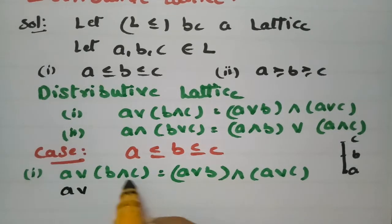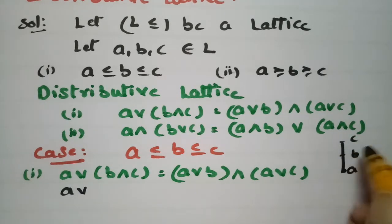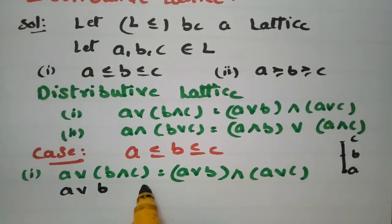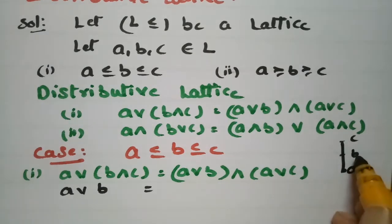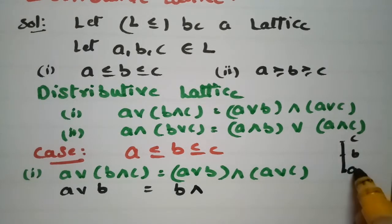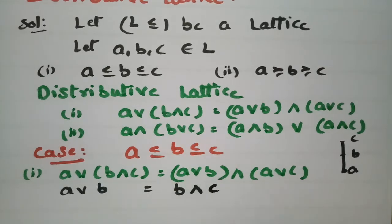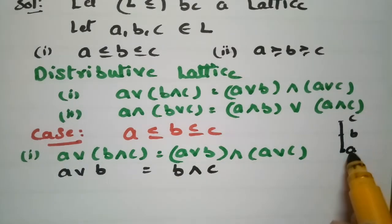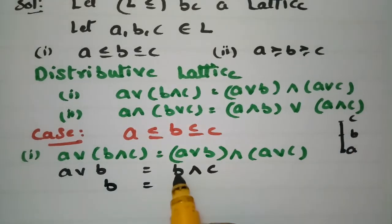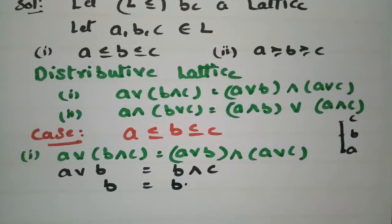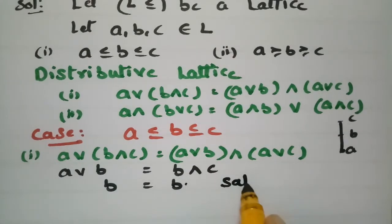From the Hasse diagram for Case 1, B ∧ C: meet is the greatest lower bound, and among B and C, B is the lower bound, so B ∧ C = B. Then A ∨ B: join is the least upper bound, and among A and B, B is the upper bound, so A ∨ B = B. For A ∨ C: among A and C, C is the upper bound. Then (A ∨ B) ∧ (A ∨ C) = B ∧ C = B. So B = B — the first condition is satisfied.